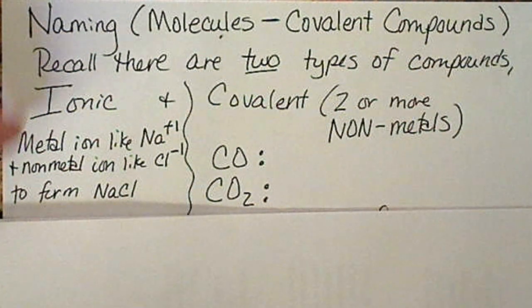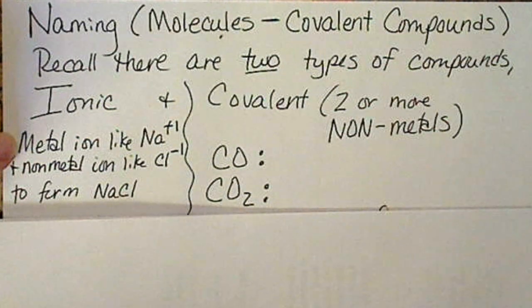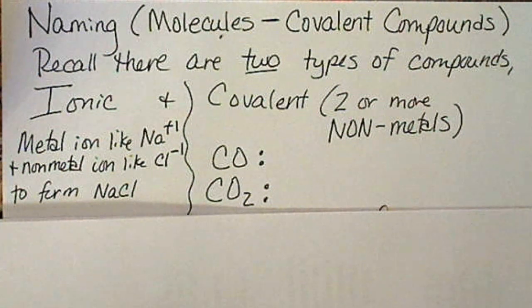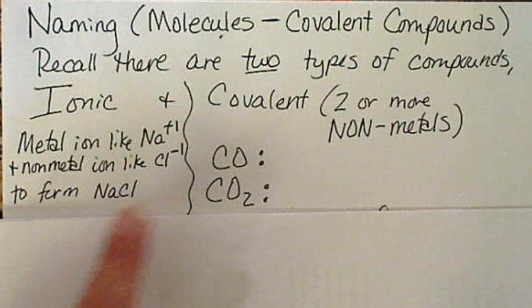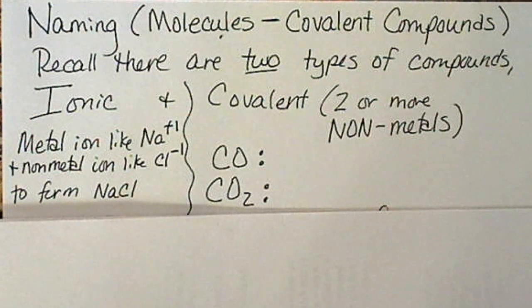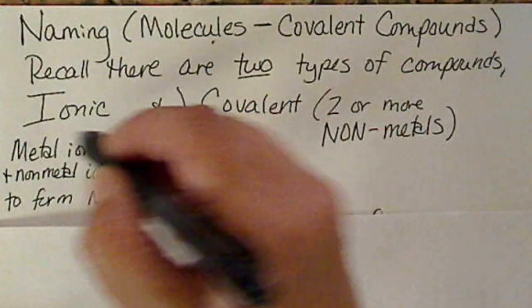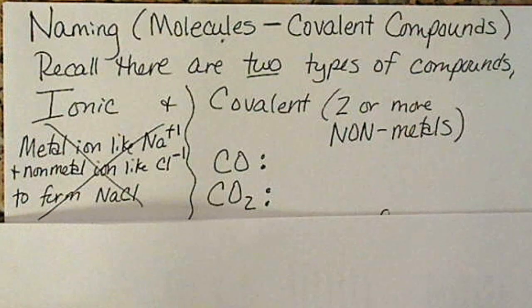An ionic compound always has a metal, for example, sodium ion is Na+ and a nonmetal like chloride would be Cl-. We are not going to talk about naming these types of compounds yet.